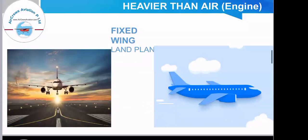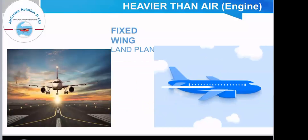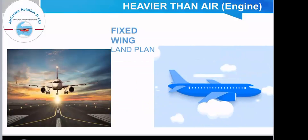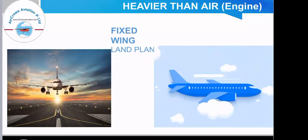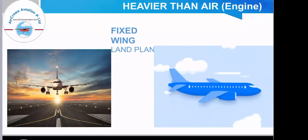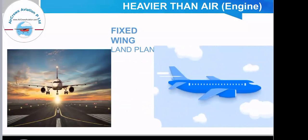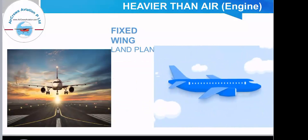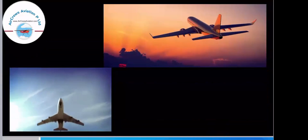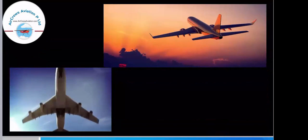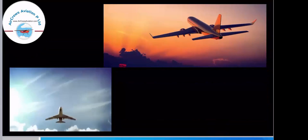The next type is the fixed-wing land plane. Generally we see such aircraft as civil airliners, which are used to transport civilians, or as cargo aircraft. Airlines are majorly using such types of aircraft. Here we have some photographs — these aircraft have a fixed type of wing.